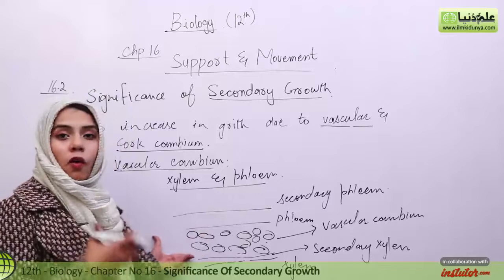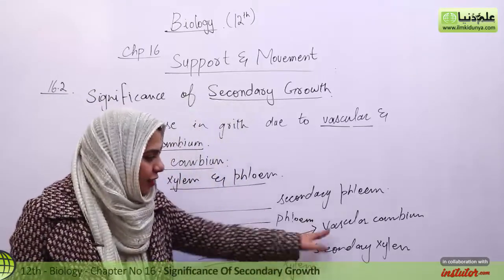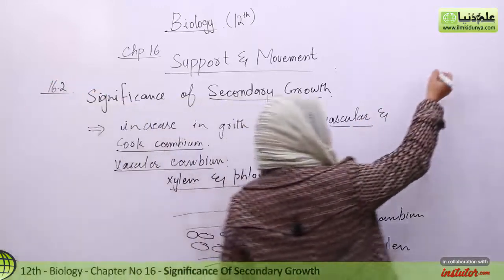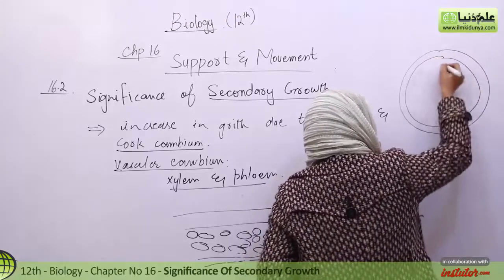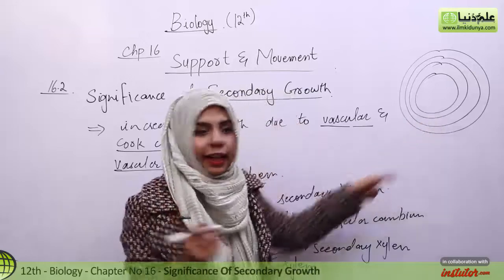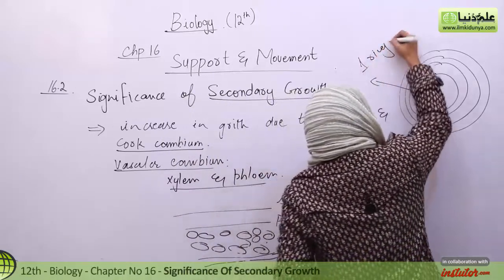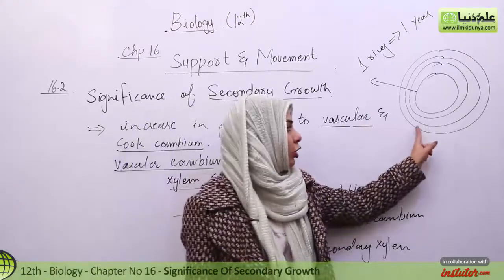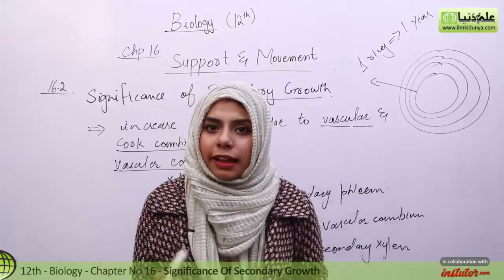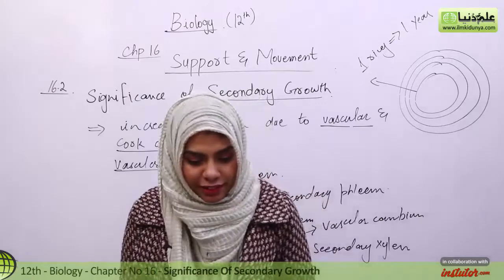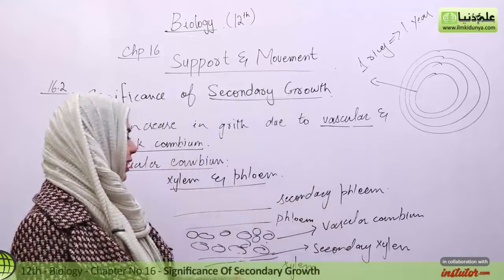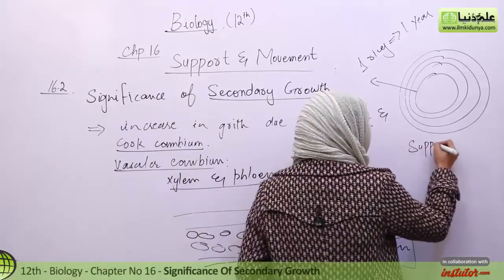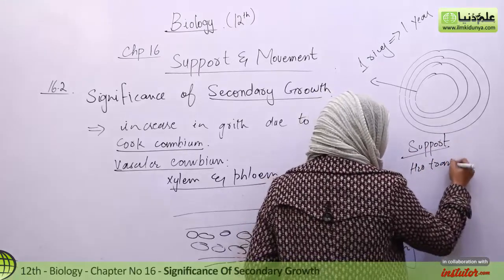Over the years, the vascular cambium gives another layer of secondary xylem and secondary phloem each year. If we see these layers in the plant stem, you can observe rings — one ring for each year. So if a tree or shrub has five rings, that means the plant is five years old. Secondary xylem is also important for supporting the plant.